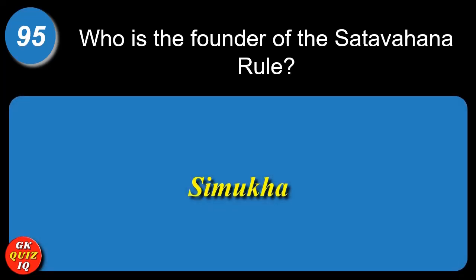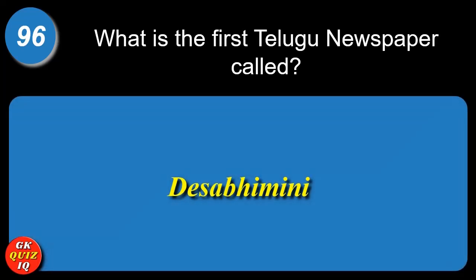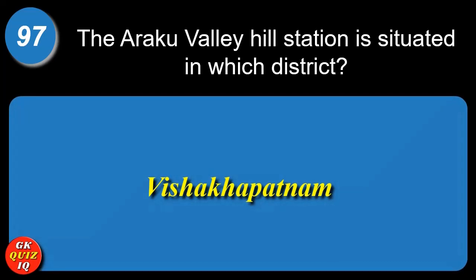Who is the founder of the Satavahana rule? Simukha. What is the first Telugu newspaper called? Desa Bhimani. The Araku Valley Hill Station is situated in which district? Visakhapatnam.